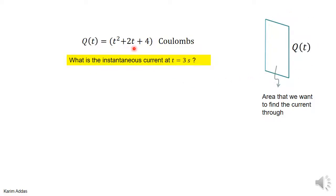So you have here t squared plus 2t plus 4 coulombs, and they're asking the instantaneous current at a certain time.